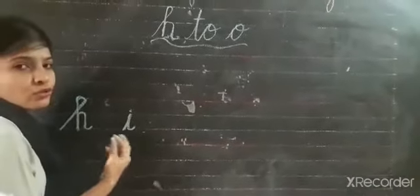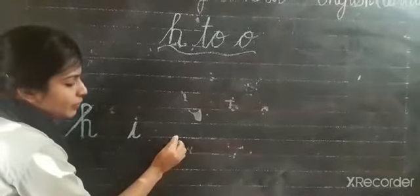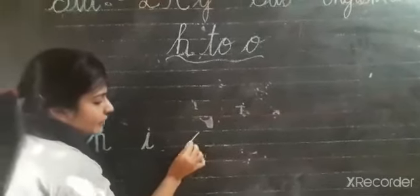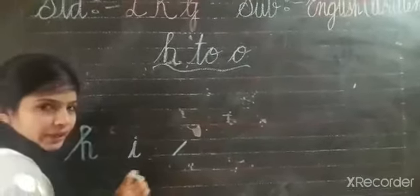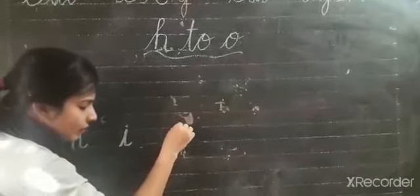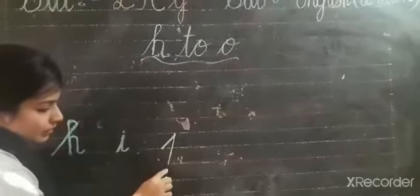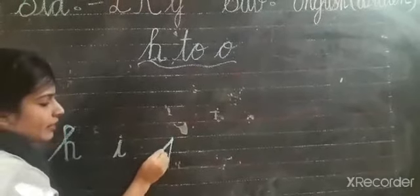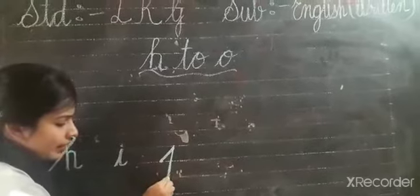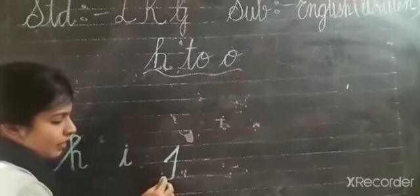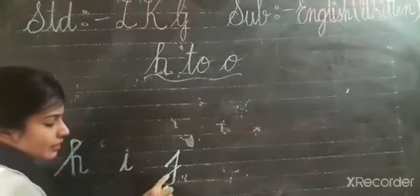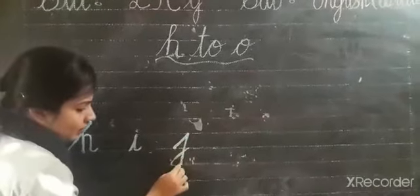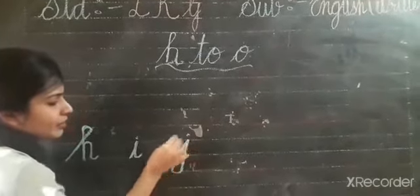J for joker. From the blue line we have to start with a slanting line up to this blue line. Then come down up to the red line. Then small curve. And then again you do a slanting line. Put here a dot.